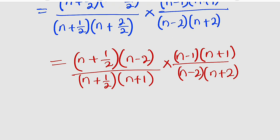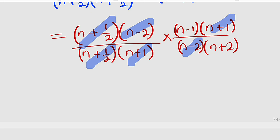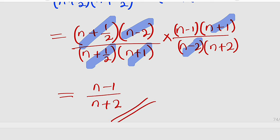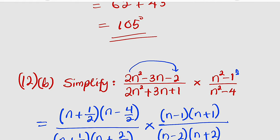Now let's cancel common factors. We can see that (n + 1) cancels with (n + 1), (n − 2) cancels with (n − 2), and (n + 2) cancels with (n + 2). What we have left is (n − 1) divided by (n + 2). So our final simplified answer is (n − 1)/(n + 2). Thank you for watching — do share with your learning colleagues and don't forget to subscribe to my YouTube channel for more videos. Now let us move on to question number 13, which is the last one.